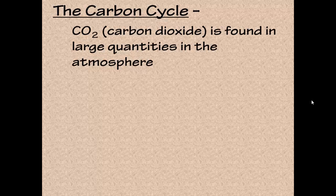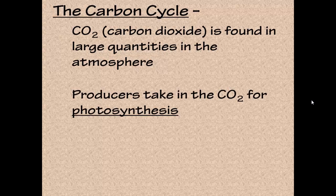Now we have the carbon cycle — something you're probably already familiar with without realizing it. Carbon dioxide is found in large quantities in the atmosphere. Organisms called producers take in carbon dioxide for photosynthesis. You've heard about photosynthesis since kindergarten — the plant needs water and carbon dioxide from the air to grow. The carbon dioxide goes into the organisms and they perform photosynthesis.